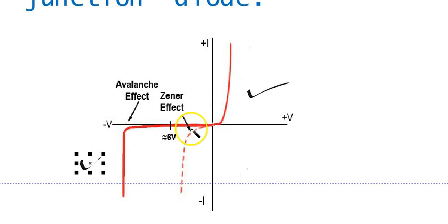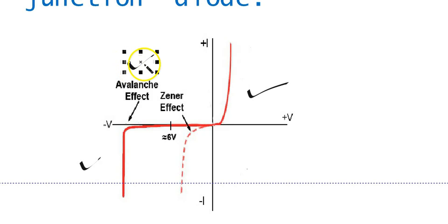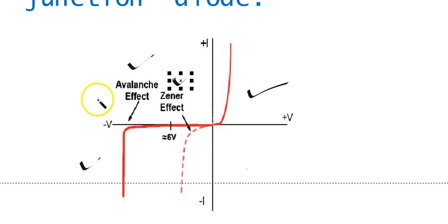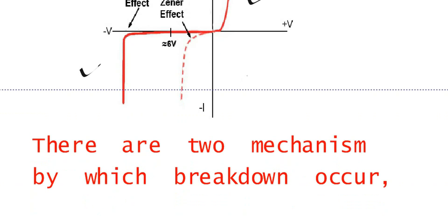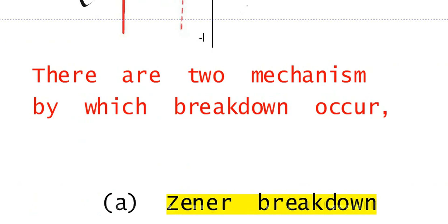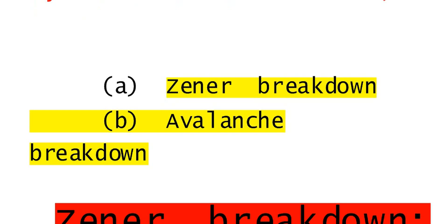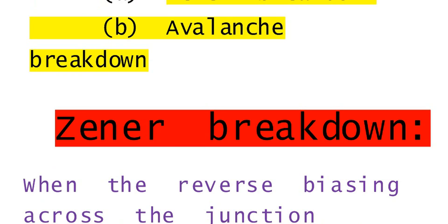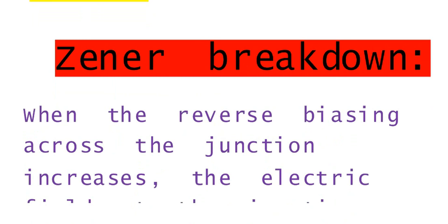There are two types of breakdown regions: the avalanche effect and the Zener effect. You study when the avalanche effect takes place and when Zener breakdown takes place. So there are two mechanisms: Zener breakdown and avalanche breakdown. First of all, we are coming to the Zener breakdown.